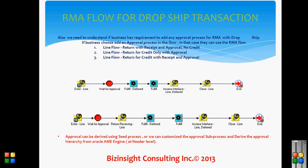We also need to understand if the business has a requirement to add an approval process for the RMA with the dropship. In that case, we again have seeded workflows: 'Line Flow Return with Receipt and Approval,' 'No Credit,' 'Return for Credit Only with Approval,' and 'Return for Credit with Receipt and Approval.' The first workflow has a wait-for-approval step but no receiving activity; the second has both a wait-for-approval step and a receiving activity.